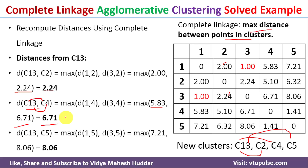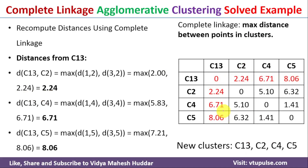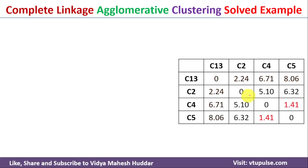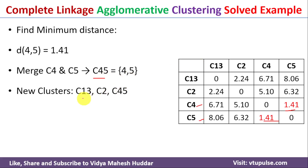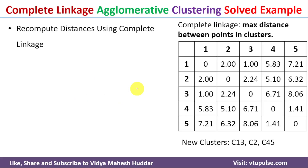We update the distance table with these new values. The minimum value in the updated table is 1.41, which is between clusters C4 and C5. So we merge C4 and C5 to get the new cluster C45. After merging, the new clusters are C13, C2, and C45, and we again need to recompute distances using complete linkage.